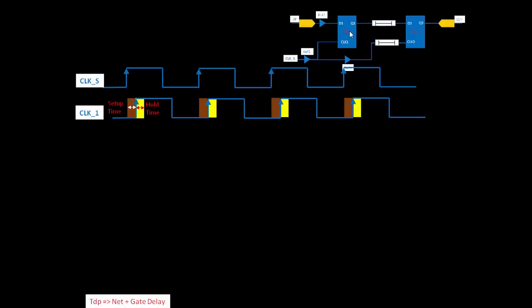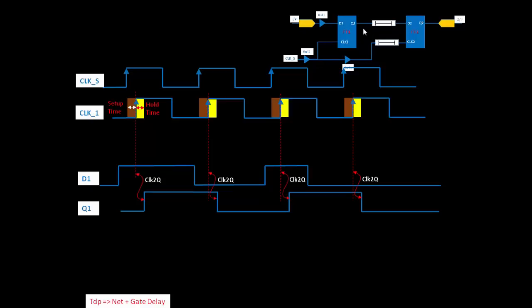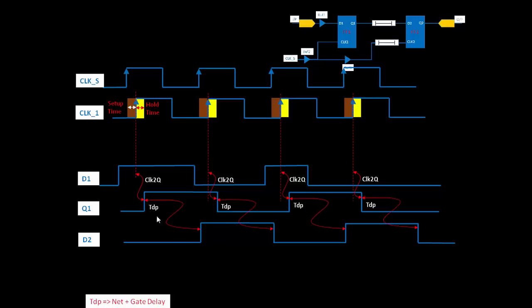The requirement of the flip-flop is that data should be stable for a certain time before the clock edge — that is the setup time — and similarly, data should be stable after the clock edge — that is the hold time. D1 is not changing within the setup and hold time window. With the positive clock edge, there is a CLK2Q delay, after which we get Q1 output. Q1 then travels to the next stage with some interconnect or combinational delay, referred to as TDP — the net or gate delay.